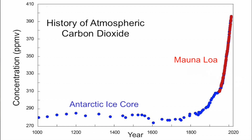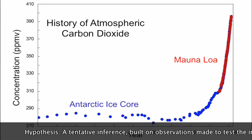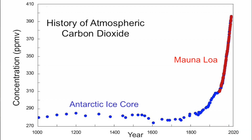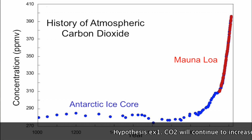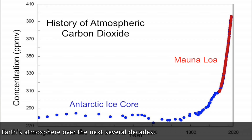An observation is different from an inference, in that an inference is really a synonym for a hypothesis — a tentative inference, built on observations made to test our original inference. We might observe something and infer something else; that becomes our hypothesis, and we'll seek new observations to test it. Examples of inferences related to the CO2 curve would be that carbon dioxide will continue to increase in the Earth's atmosphere over the next several decades. That is an inference — we don't have it as an observation yet — and it is testable by making observations into the future.